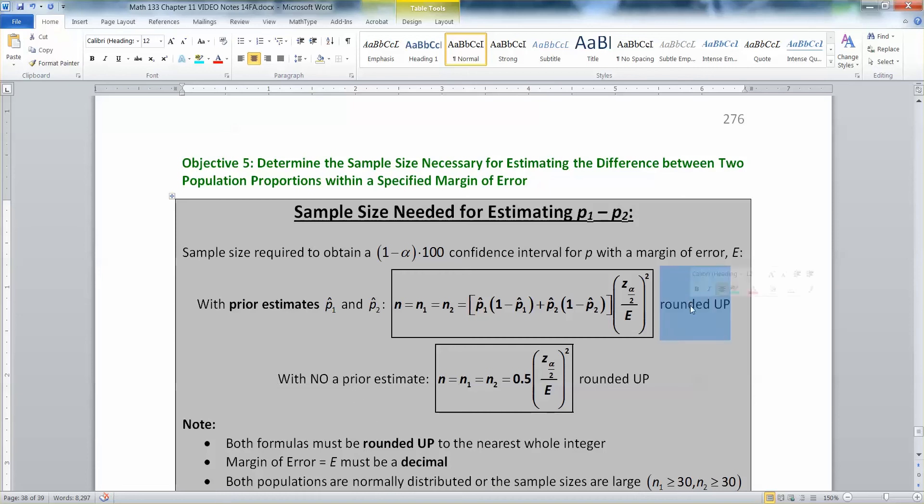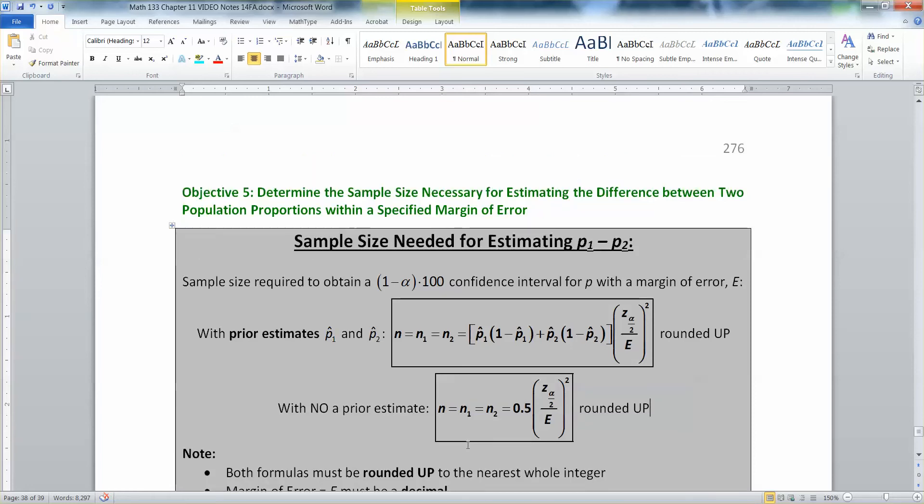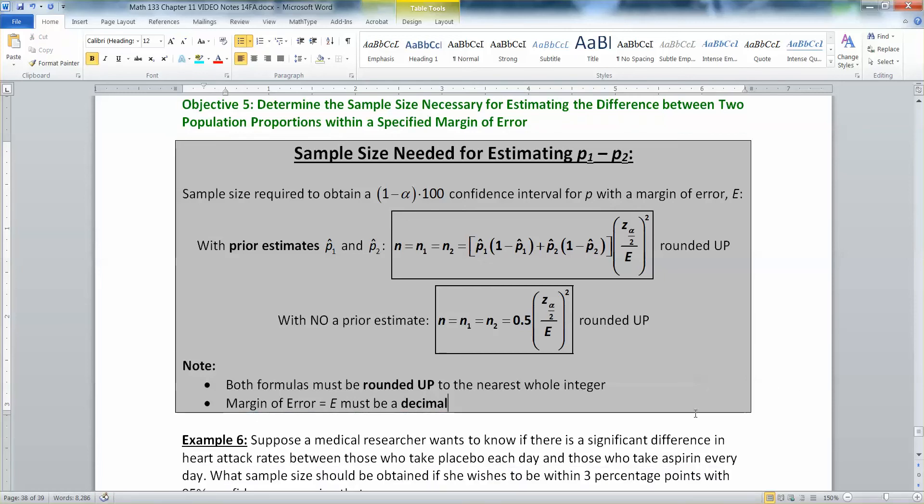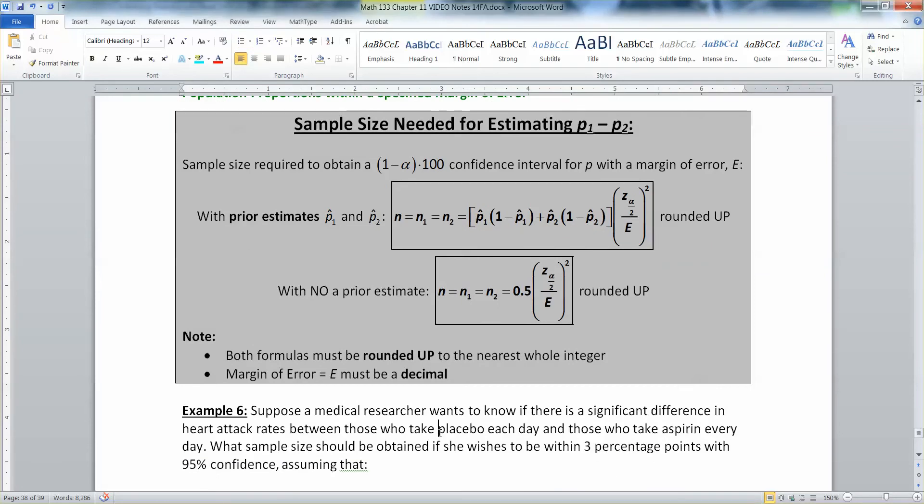Always of course round up. We wouldn't have it any other way. And then if you have no clue, no prior estimate, you've never done this before, you've never called people up and asked them these questions before, then you're going to use the bottom one. Both formulas of course must be rounded up, which is the same as in chapter 9. The margin of error must be a decimal because you're working with proportions here, so you better have decimals. And both populations must be normally distributed or their sample sizes.